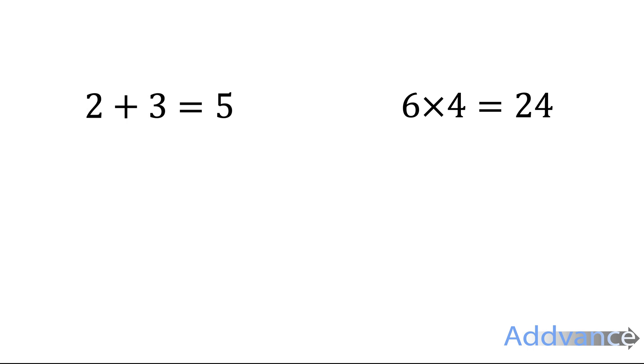Now what I can do is I can move the 3 to the other side of the equation by making it negative. So I can get 2 equals 5 minus 3. I can also move the 4 in 6 times 4 equals 24 to the other side by making it a divide. 6 equals 24 divided by 4.